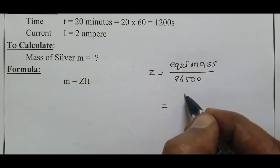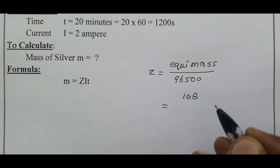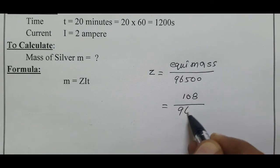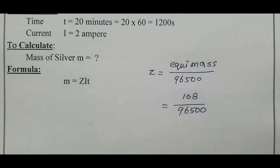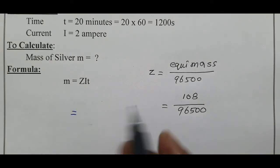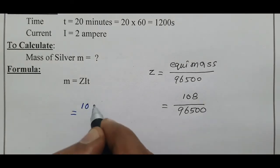Atomic mass of silver is 108, valency of Ag+ is 1, therefore 108 divided by 1 equals 108 divided by 96,500. Z value equals 108 divided by 96,500.